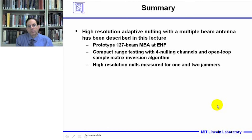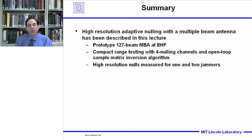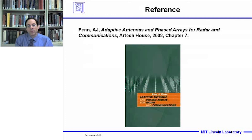In summary, this lecture covered a high-resolution adaptive nulling multiple beam antenna system. This prototype system had 127 beams at EHF. Using a compact range to test four nulling channels and the open-loop sample matrix inversion algorithm, we demonstrated 30 dB high-resolution adaptive nulling for one and two jammers. The book Adaptive Antennas and Phased Arrays for Radar and Communications, chapter 7, can be used to supplement this lecture. Thank you.